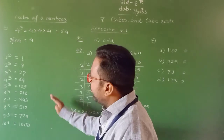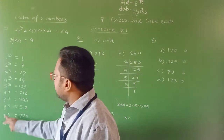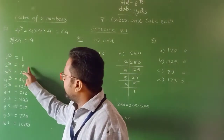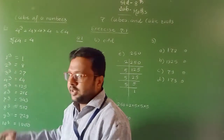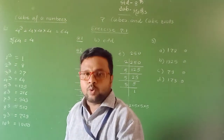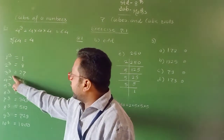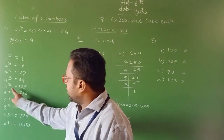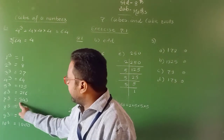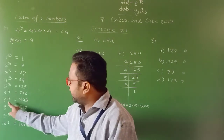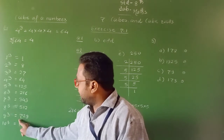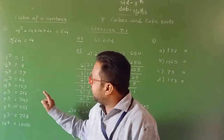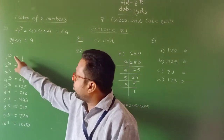Here I write the cubes of numbers from 1 to 10. 1 cube is 1. 2 cube is 8. 3 cube — 3 into 3 into 3 — is 27. 4 cube is 64. 5 cube is 125. 6 cube is 216. 7 cube is 343. 8 cube is 512. 9 cube is 729. And 10 cube is 1000. These are the cubes of numbers from 1 to 10.